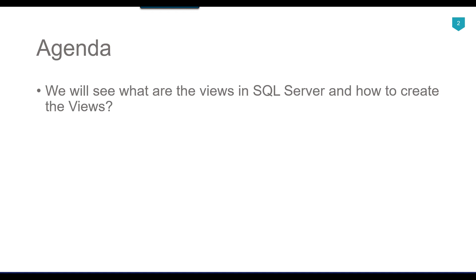You can think of views in SQL Server as a virtual table. Views are virtual tables and they do not contain any data — they do not physically store any data. All the data is stored inside the actual tables and they are simply stored SQL queries. They do not store any data but they are objects of the database, and similar to SQL Server tables they also contain data in the form of rows and columns.